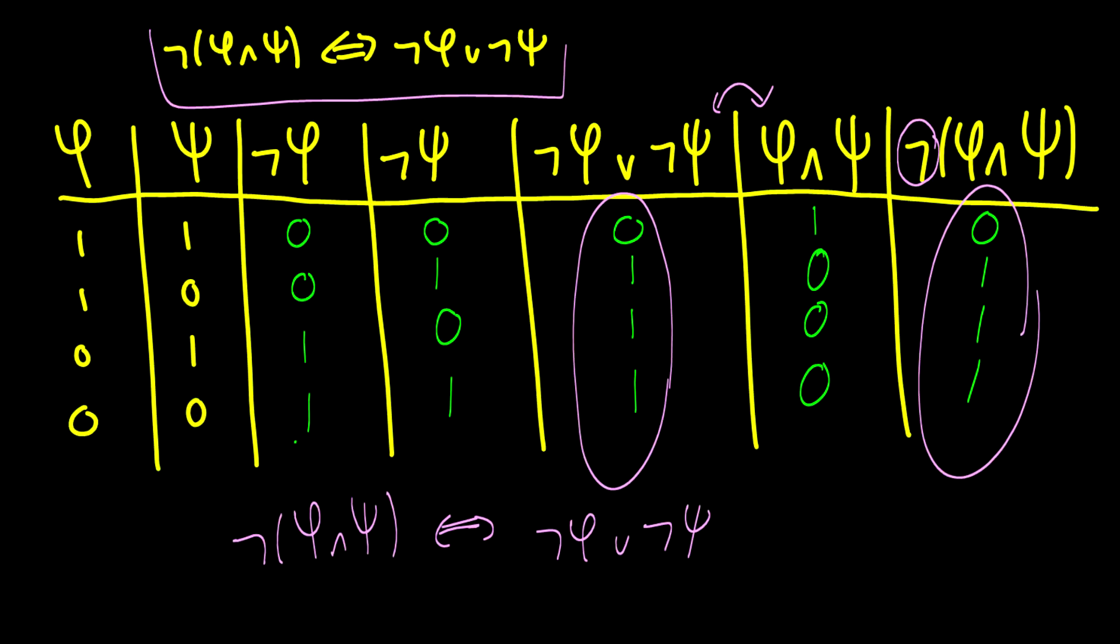And in fact, this is something called De Morgan's law, that if you have P∨Q and you negate it, then you get ¬P∧¬Q. And this works if you switch the signs here as well. So you also get ¬(φ∨ψ) is the same thing as saying ¬φ∧¬ψ. But we'll get to that later. We'll talk about those laws next time.